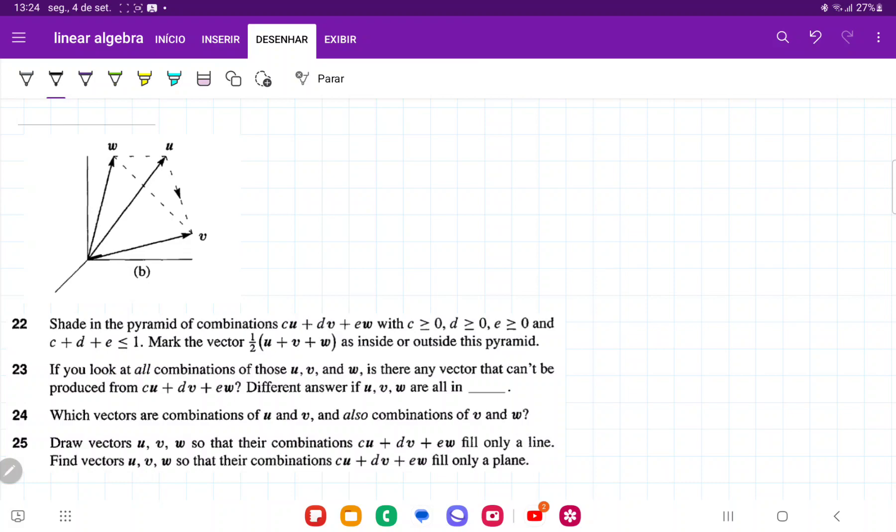The combinations of u, v are going to lie in this plane spanned by u and by v, so about this plane here. And this is an infinite plane, but I've just drawn it. Actually, let me improve this a little bit. This would be my plane u, v.